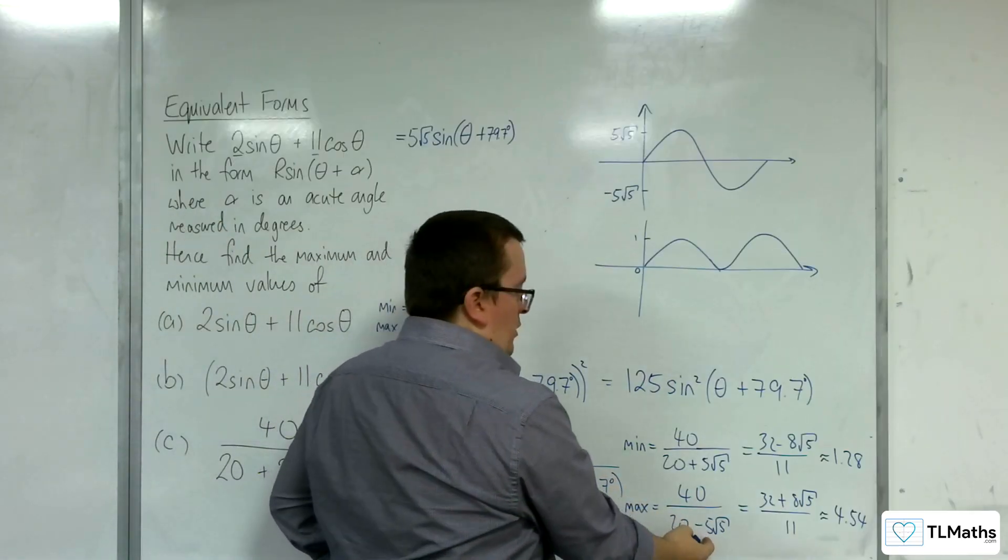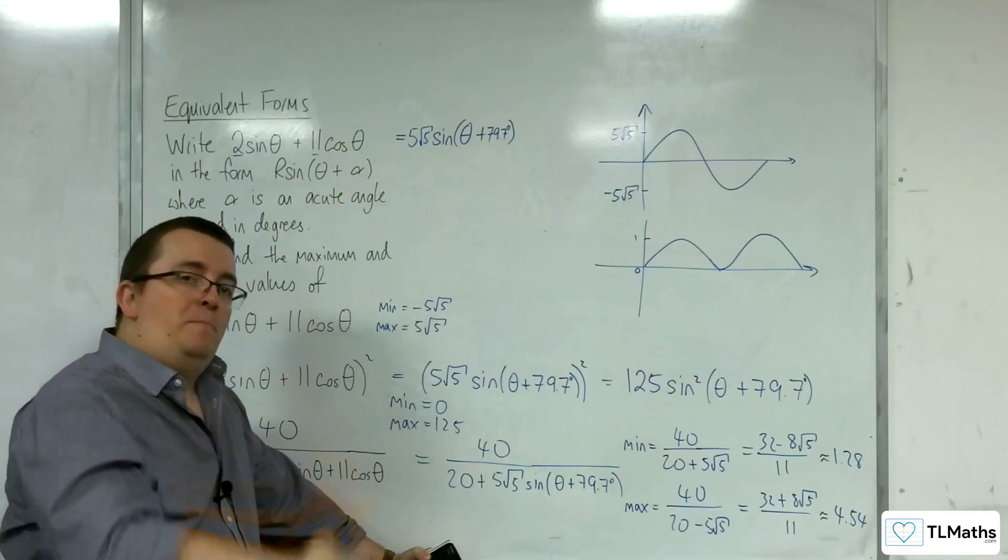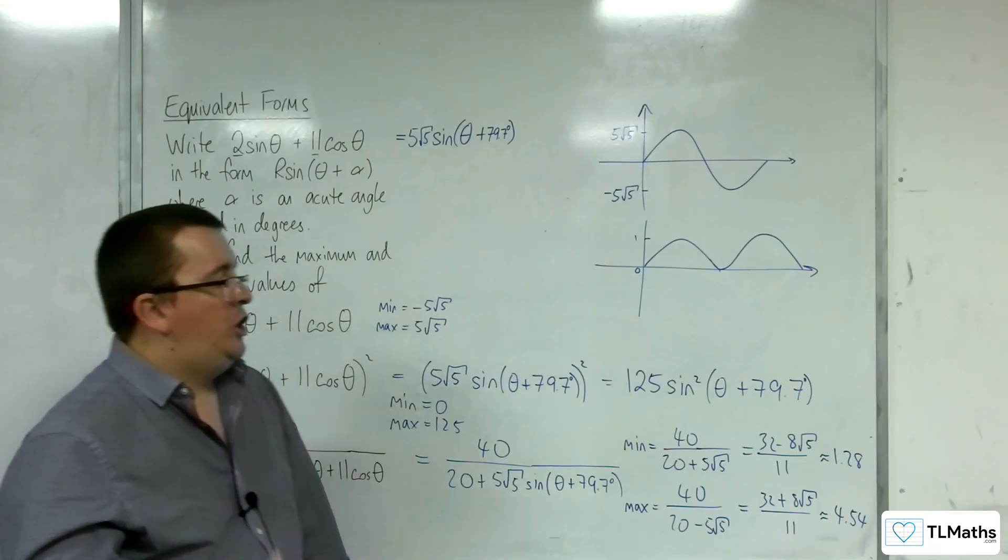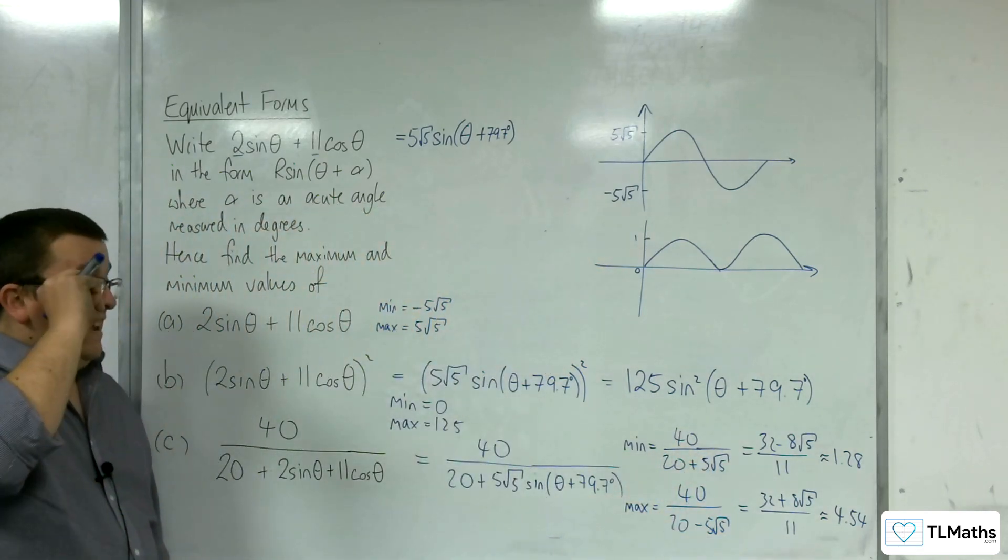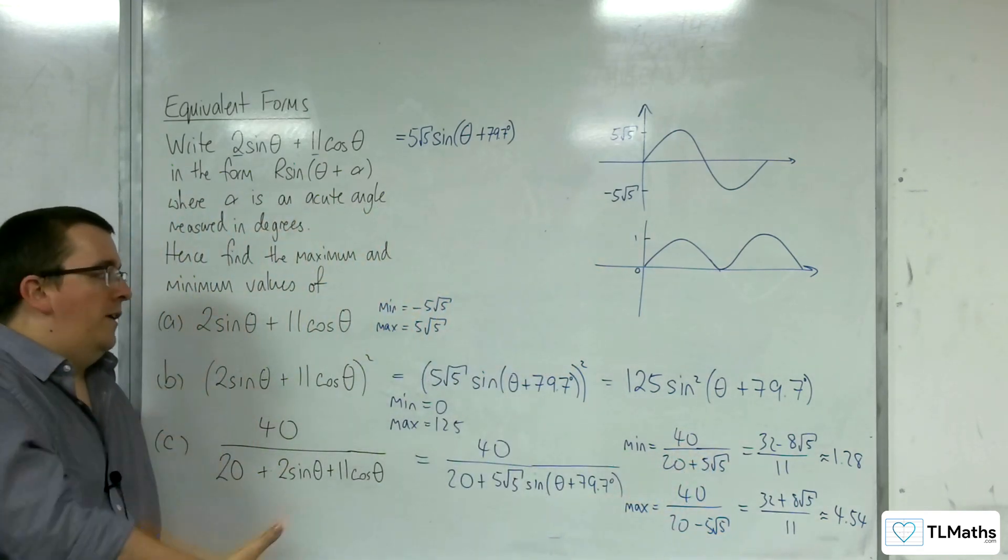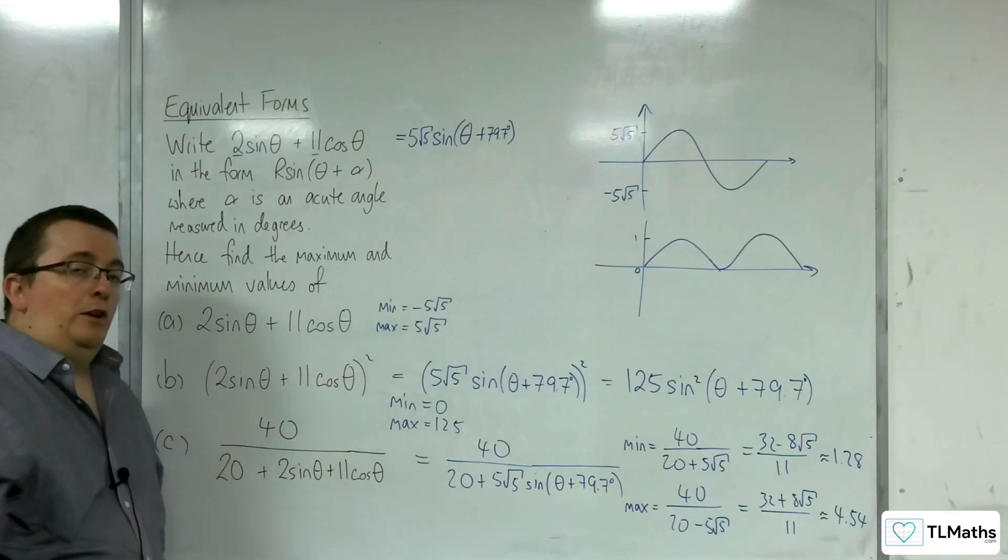And when you're doing the subtraction, you're making the denominator smaller, which makes the fraction bigger. So, it's actually the other way around to how you would have initially perhaps expected. But this is how you can find the maximum and minimum values of questions that look like this.